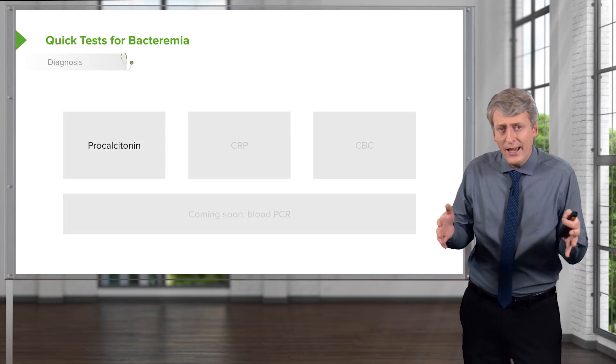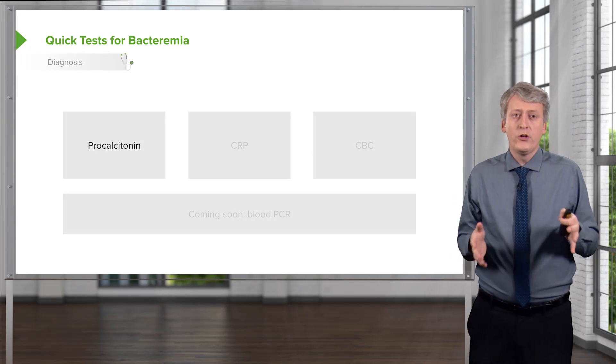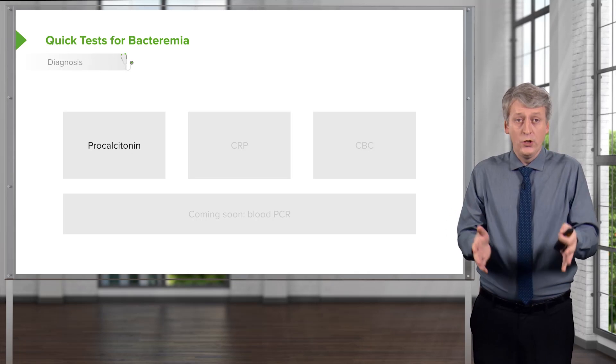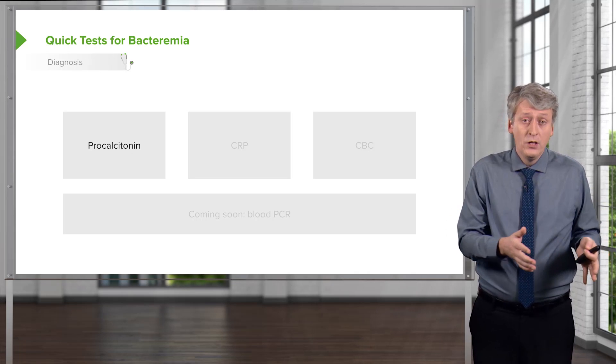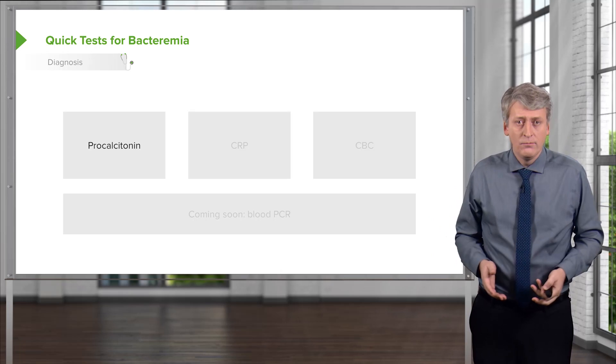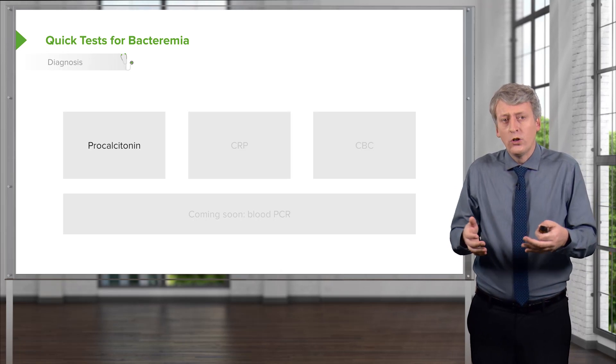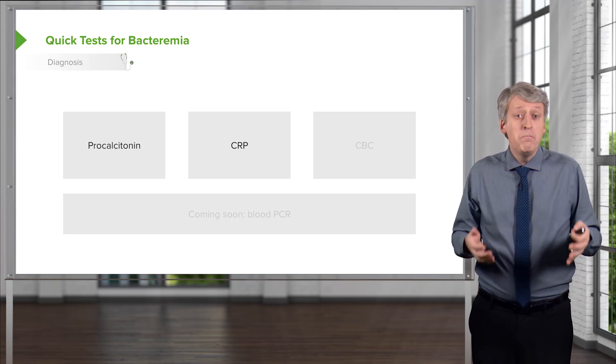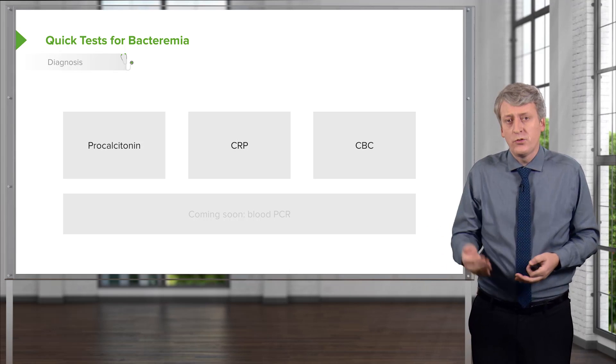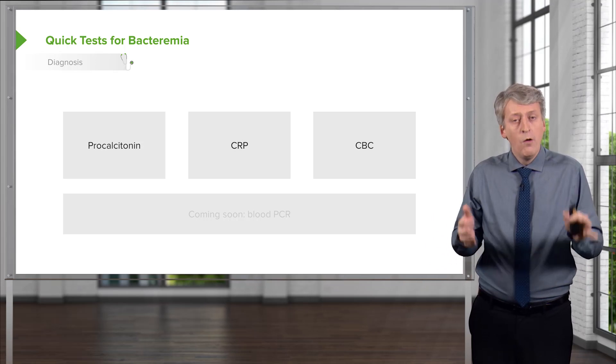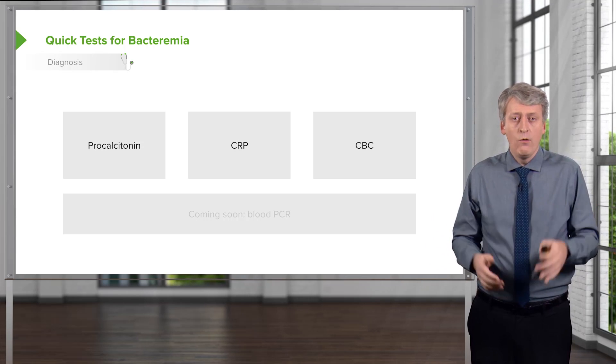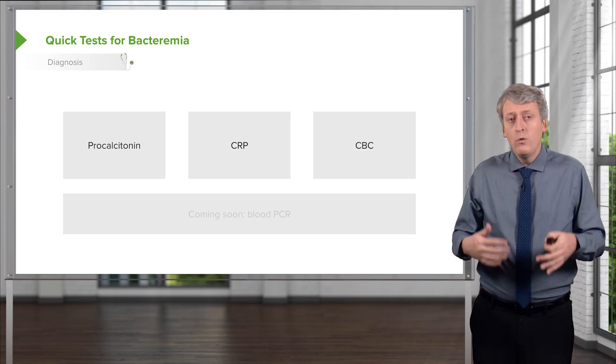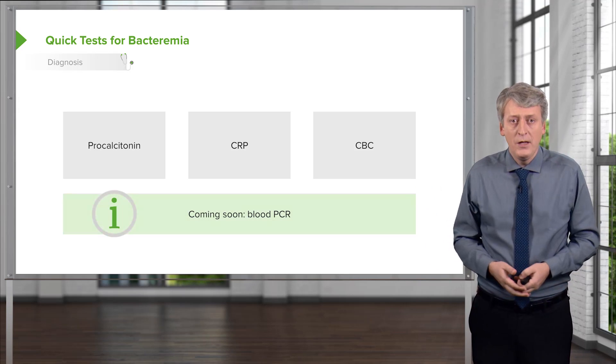We need tests that can tell us quickly whether a child is at risk for bacteremia so we can distinguish well-appearing children who we should worry about versus those who we shouldn't. There are several tests out there. There seems to be early evidence that procalcitonin and CRP may in fact be better than the CBC in terms of screening for this. But right now, most people are still using a high white count. If the white count is above fifteen or below five, we worry a little bit about bacteremia.